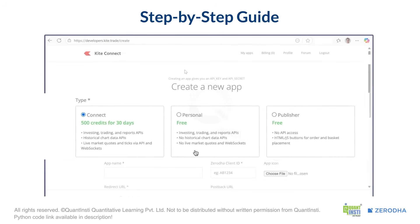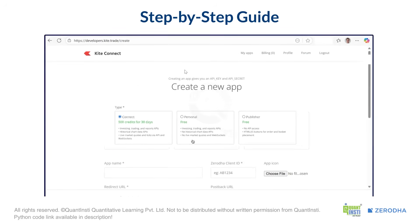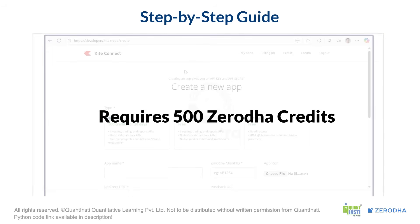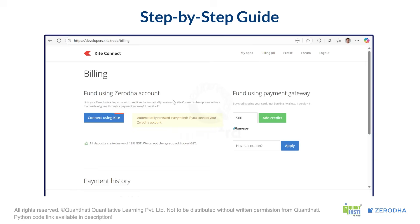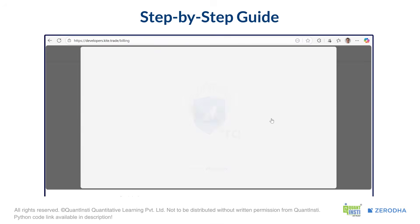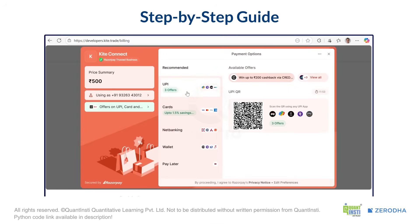One quick note for Connect apps: you need to have at least 500 Zerodha credits in your account. You can usually see these credits in your Kite account. If you don't have enough, you might need to add them first by going to the Billing tab. You can either add credits by connecting your Zerodha account or use the payment gateway and pay using any of the given payment methods, as shown on the screen.